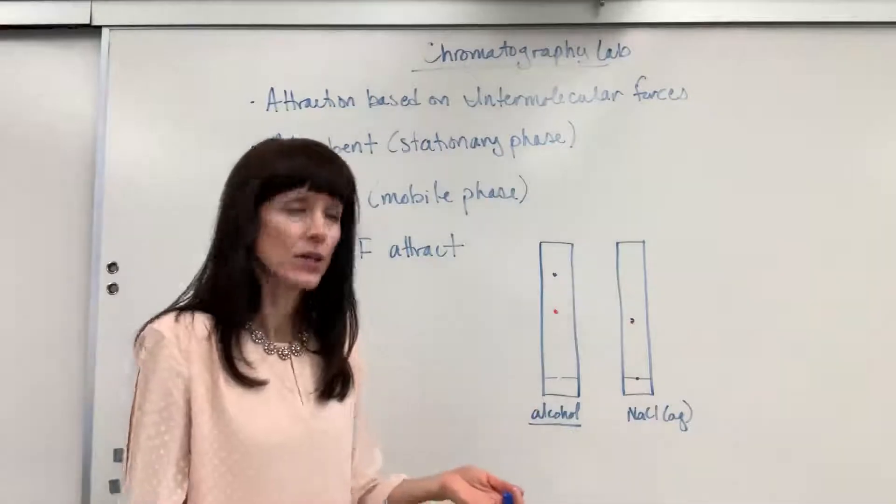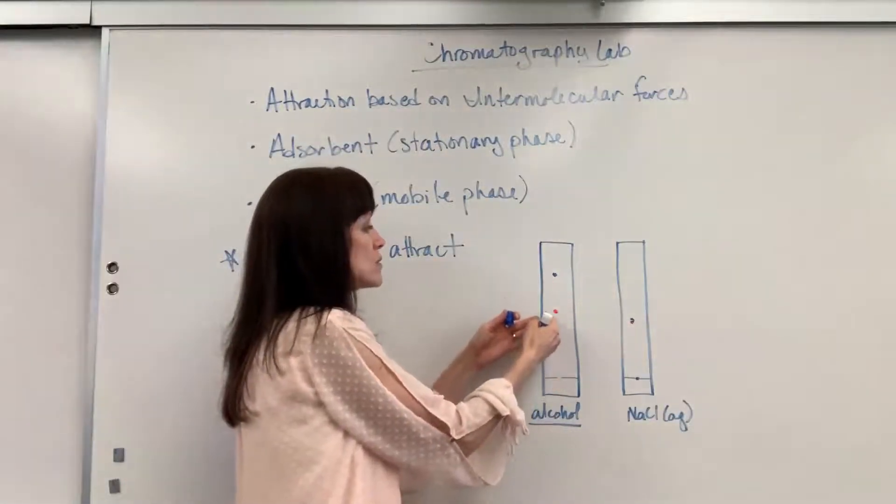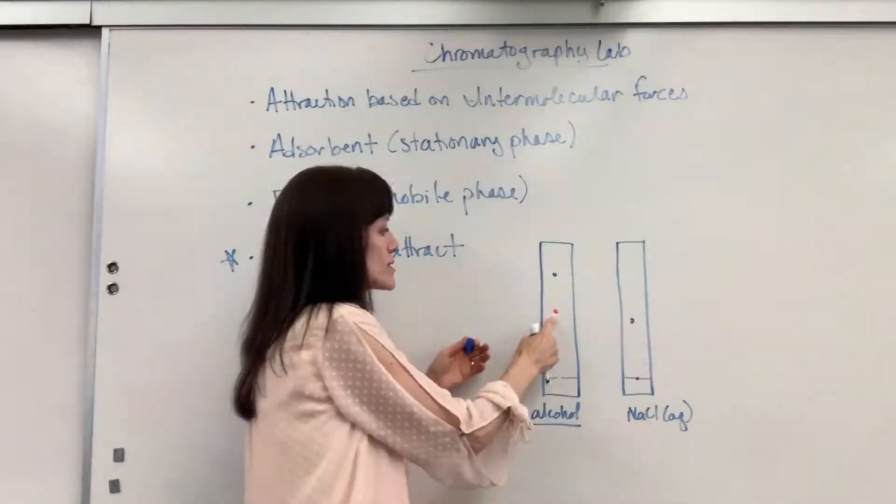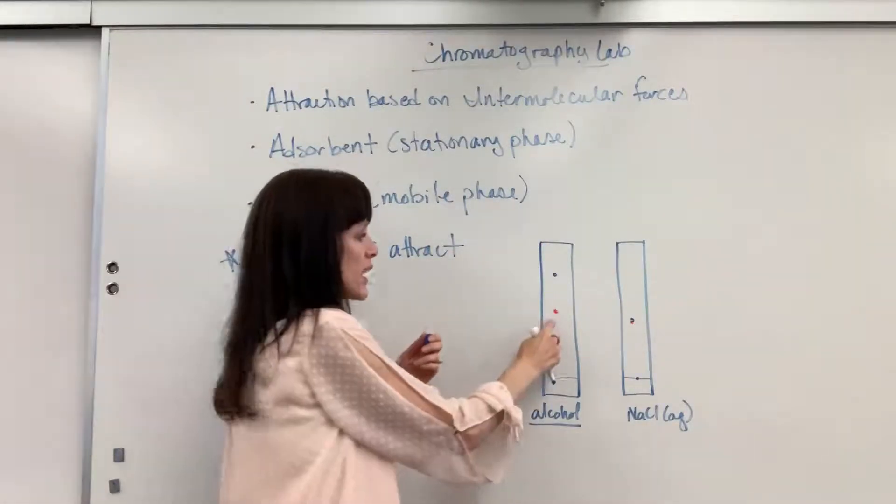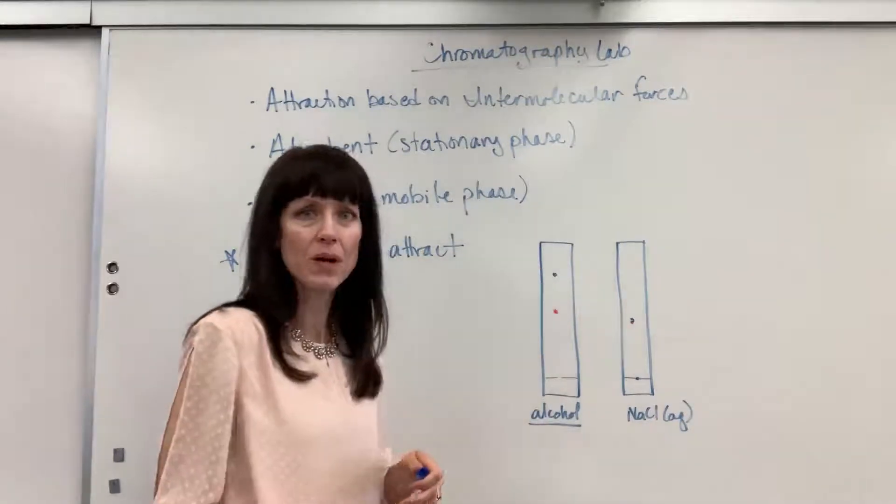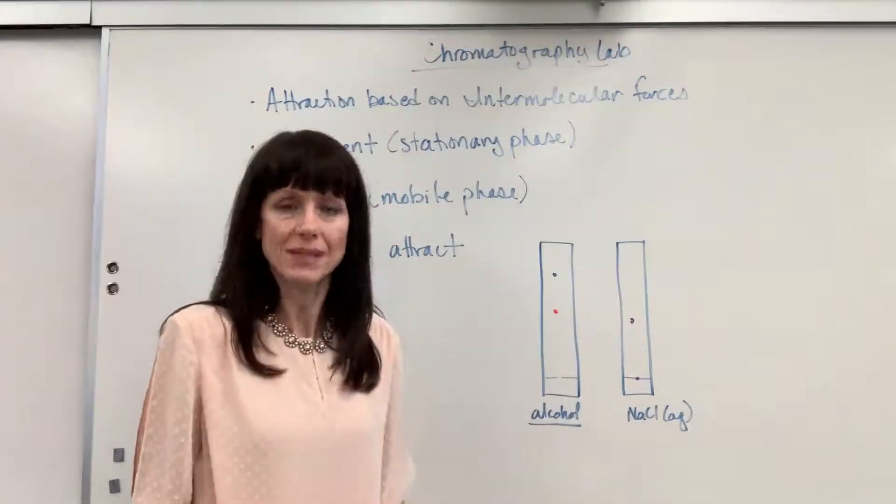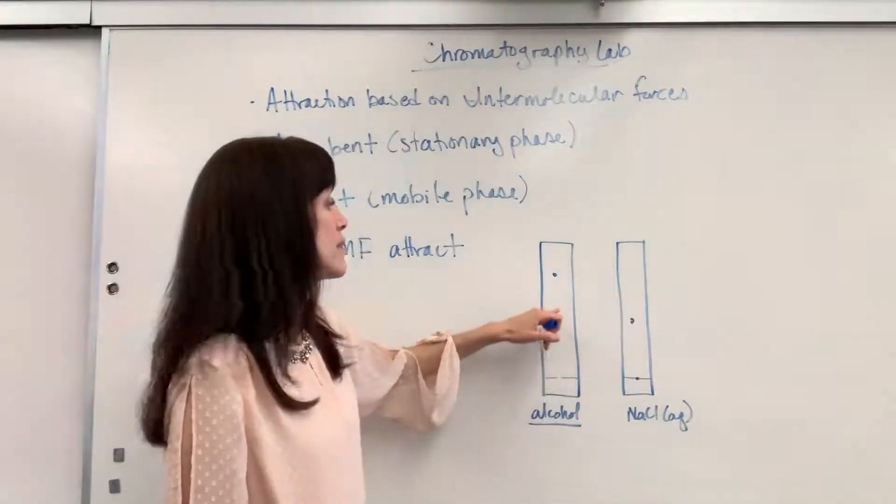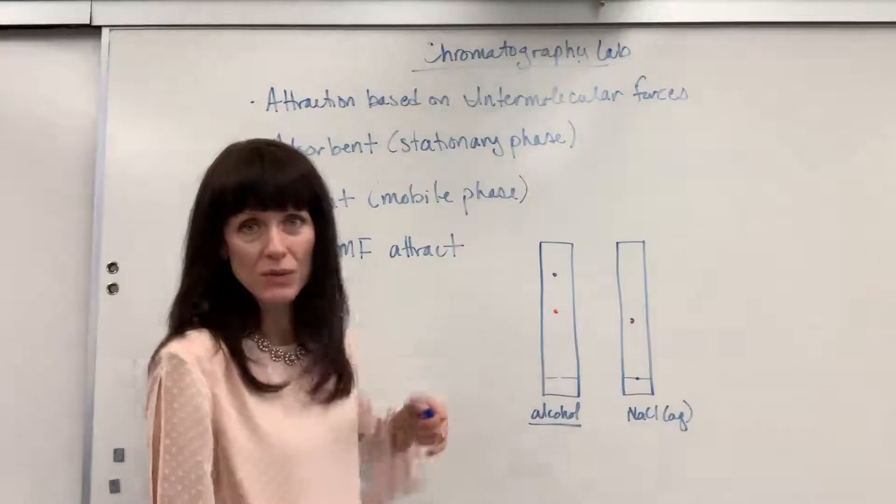Now, why is that? Well, it's because the blue dye followed. It went with the solution as it moved up the paper, whereas the red stopped. That red dye stopped right there, but the solution kept moving up the paper. Why did it stop? Intermolecular forces. Those forces were more attracted to the paper than to the solution that was moving to the top.